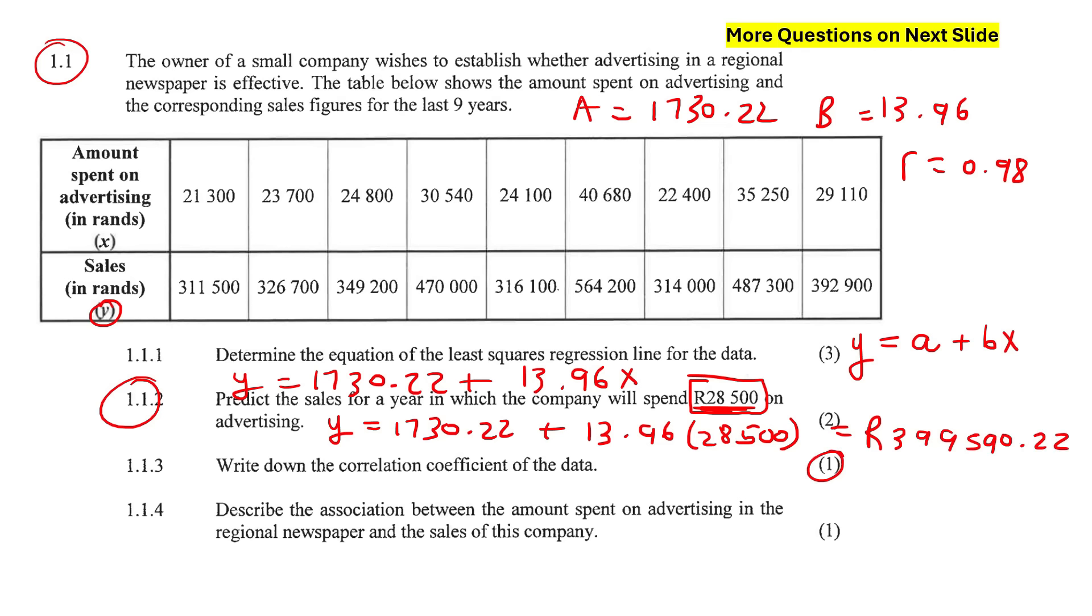The next question for only one mark, write down the correlation coefficient. Well, that's r, and we worked it out already. Now, this one says, I hate these questions. Describe the association between the amount spent on advertising. Okay, this one's not bad, but sometimes these questions can be really weird. Describe the association between the amount spent on advertising and the sales.